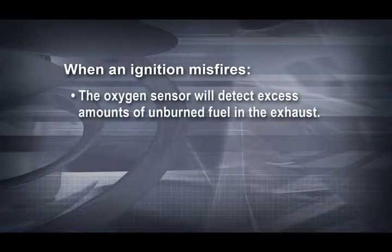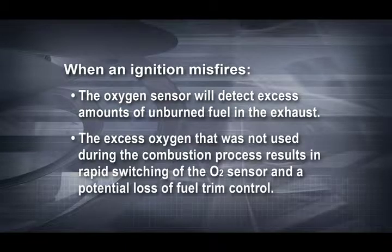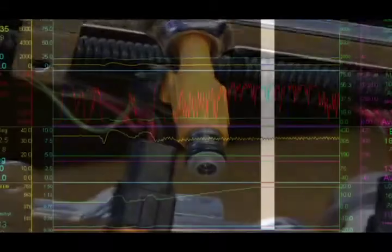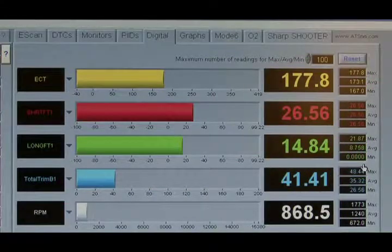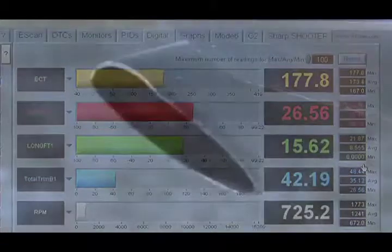The oxygen sensor will detect excess amounts of unburned fuel in the exhaust. The excess oxygen that was not used during the combustion process results in rapid switching of the O2 sensor and a potential loss of fuel trim control. In the past, it was sometimes assumed that this sequence of events would cause the powertrain control module, or PCM, to increase the fuel injector pulse, leading to even more fuel releasing into the exhaust because the PCM determined the system was running lean. In fact, what happens isn't consistent from one firing event to another, let alone from one car to the next.